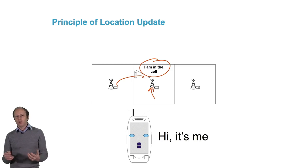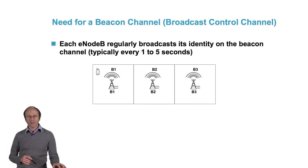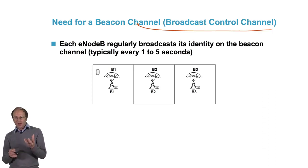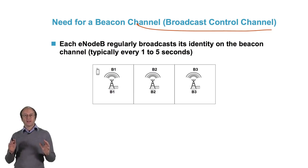If we look at what this entails, the first thing is that the terminal must be able to detect a change of cells. To do this, we have the concept of a beacon channel. What is a beacon channel, also called broadcast control channel?